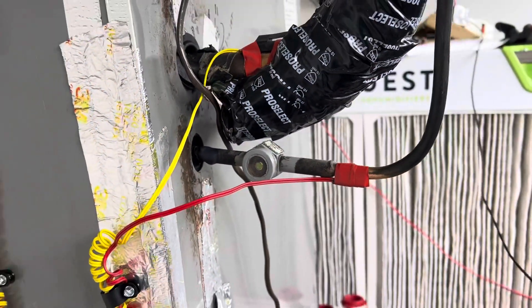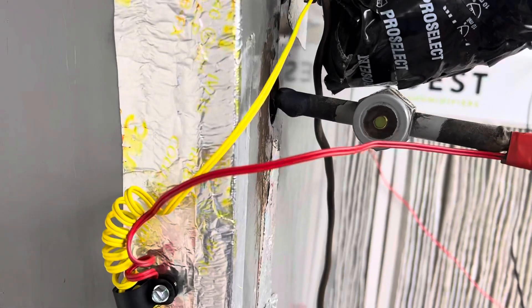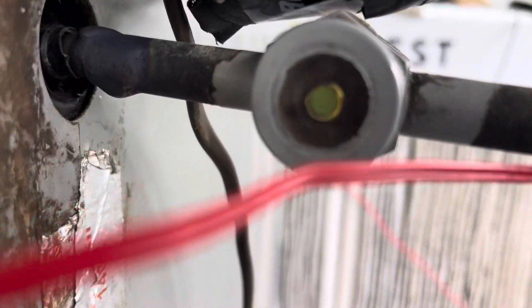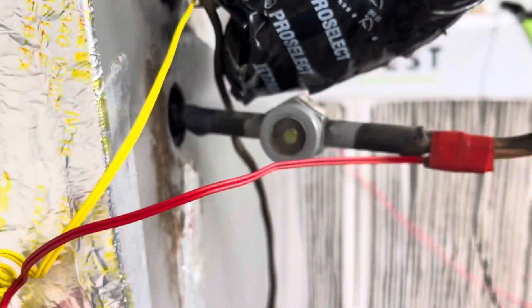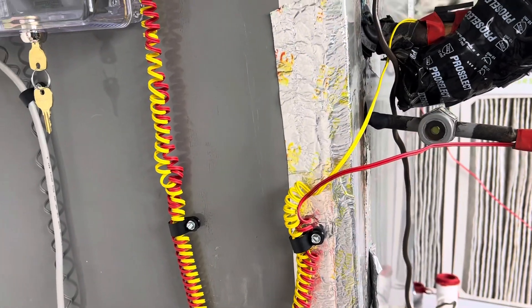What do you see there? This is a sight glass just before the expansion valve. Now I leak checked the shit out of this the other day because I worked on it and did an earlier video. It looks like low refrigerant.